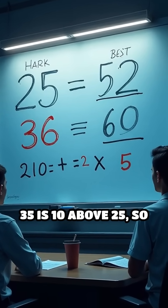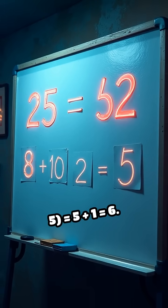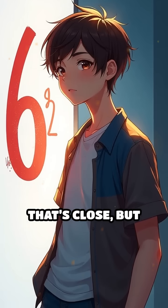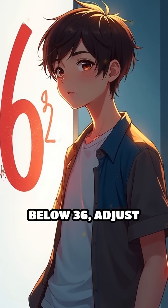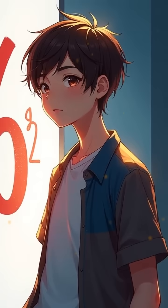35 is 10 above 25, so do 5 plus 10 divided by 2 times 5. That's 5 plus 1 equals 6. That's close, but since 35 is just below 36, adjust slightly down to about 5.92. Mind blown?